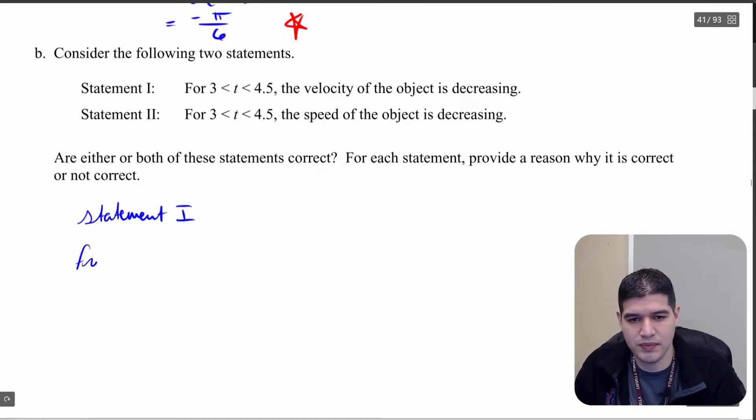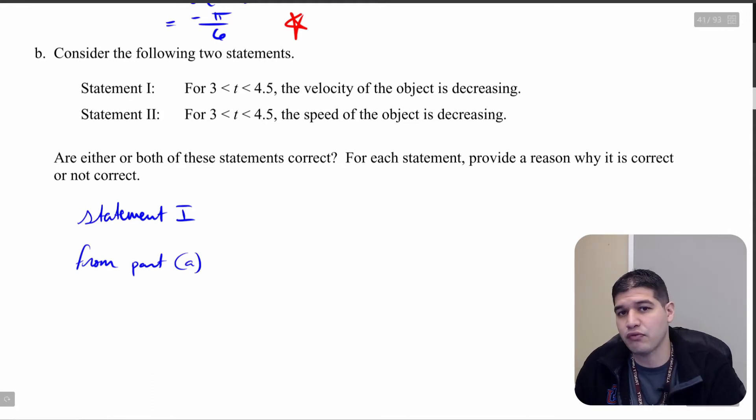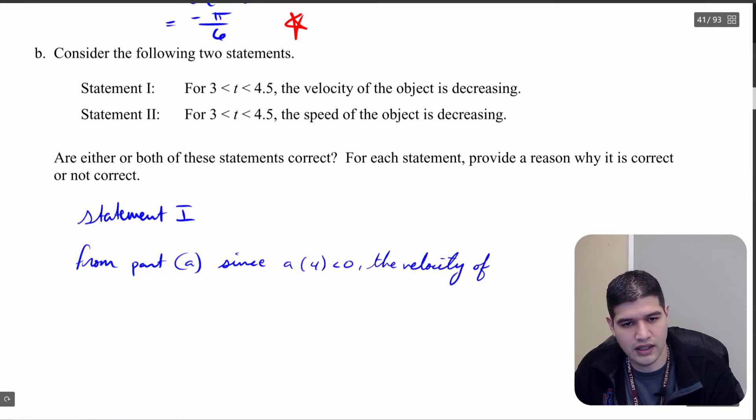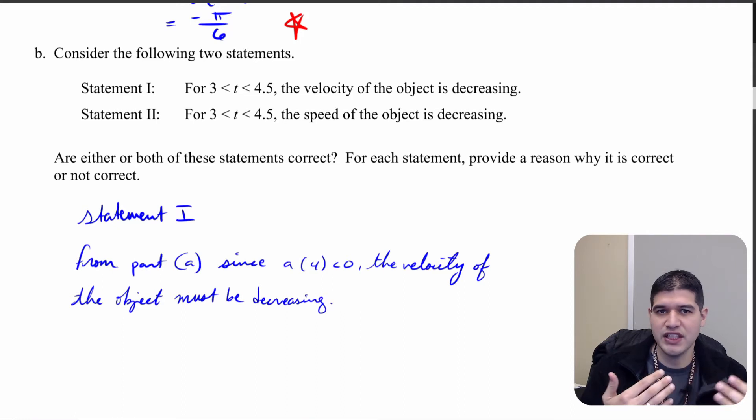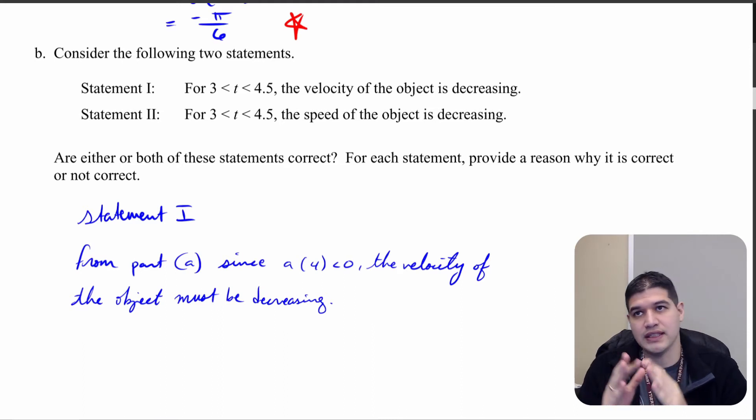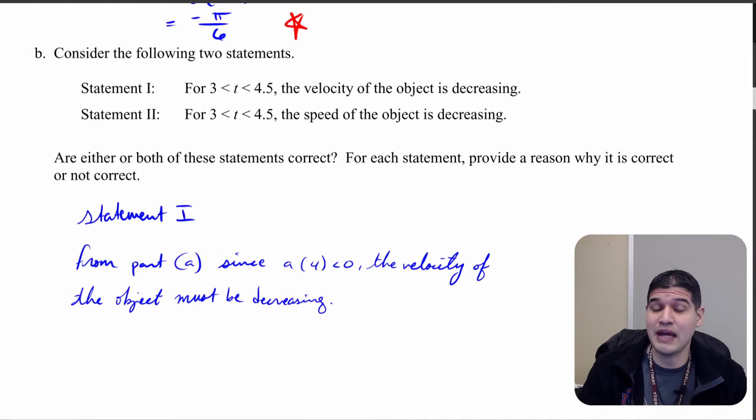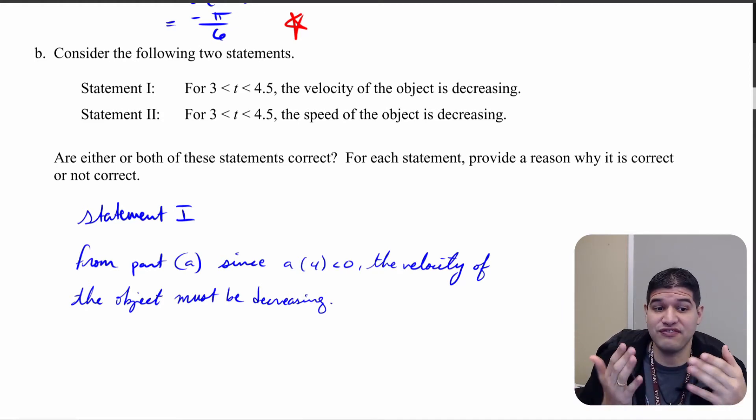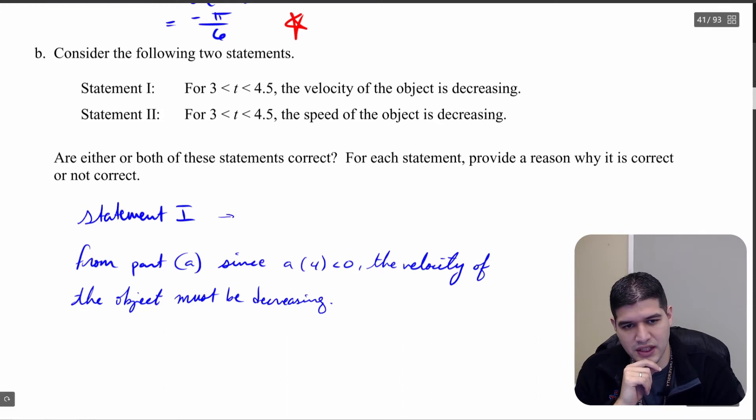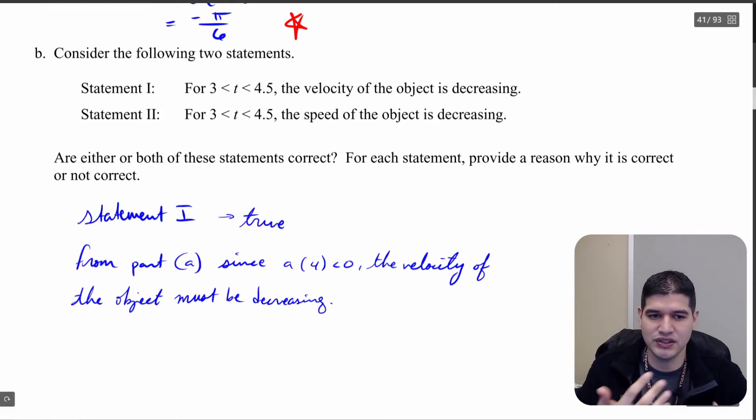So we'll say here that from part a, remember you don't have to do the work again, but you do need to reference the work that you've already done in part a. So from part a, since a of 4 is negative, the velocity of the object must be decreasing. And we don't need to make any more specifications around this. It just says the velocity of the object is decreasing. And so again, since we know that the derivative is negative, that means that somewhere within that interval, and specifically negative at 4, we know specifically within the interval that there is at least some frame of reference where this object's velocity is decreasing. So I am just going to make a specification here that this is true, because we want to say if each of these is true or false, are they correct.